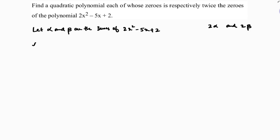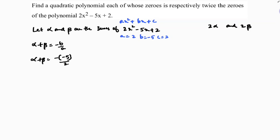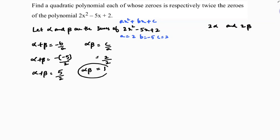First, I will find alpha plus beta, which is minus b by a. Comparing with the standard equation ax squared plus bx plus c, here a is 2, b is minus 5, c is 2. So alpha plus beta is minus of minus 5 by 2, which equals 5 by 2. Next, alpha times beta is c by a, so c is 2 and a is 2, giving alpha times beta equals 1.